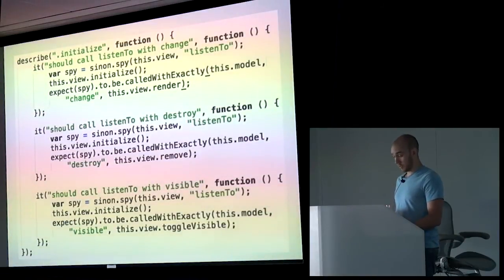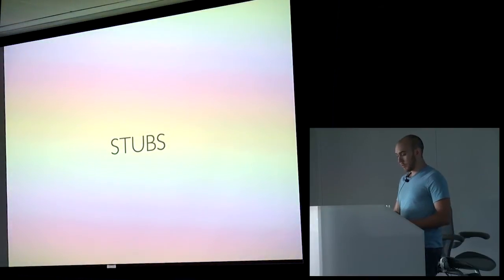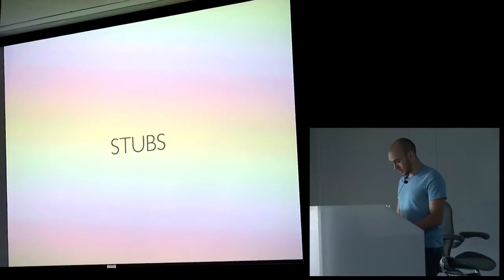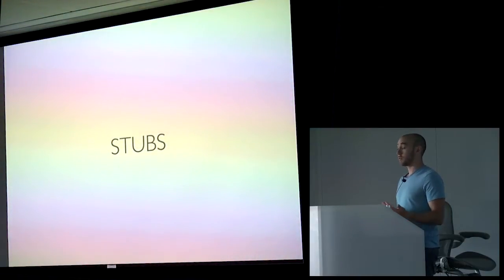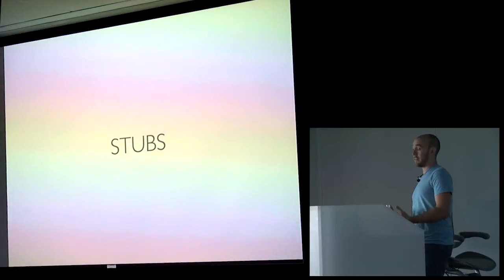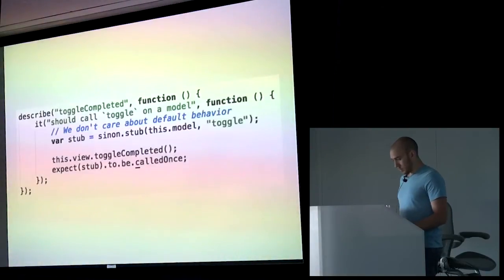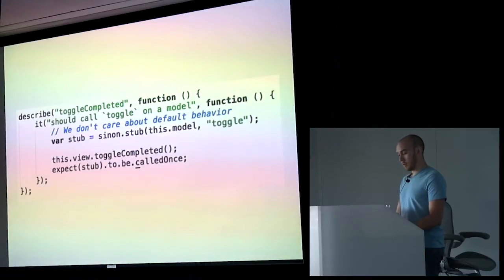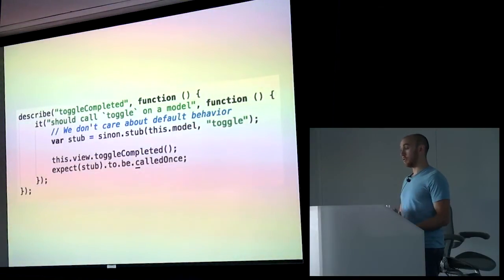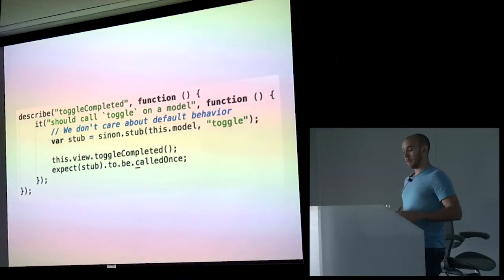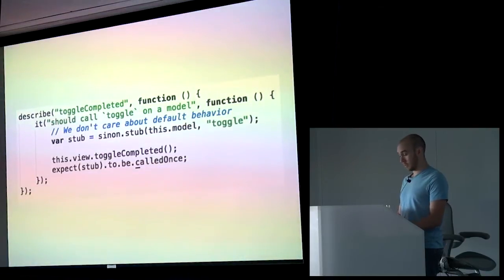Next we have stubs. Stubs are functions with pre-programmed behavior, but they also support the full spy API. So if you want to use a stub, you can also say it was called once or called with certain arguments. A good reason to use this is because you want to prevent a specific method from being called - maybe it does something like an Ajax request. Through our tests, we don't want to be testing our Ajax requests. We actually just want to simulate them because we want to say I have good data for this test and I have bad data for this test. Here's an example of a stub - the toggleCompleted method from the view. We simply create a stub on the model because we don't care about what the actual toggle behavior is doing. We just want it to go away. All we do is ensure that it was called. We couldn't do this with a basic assertion - only with Sinon.